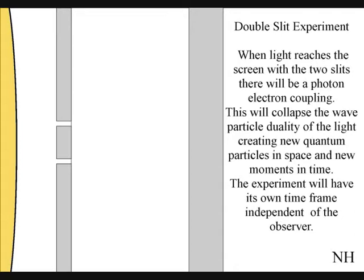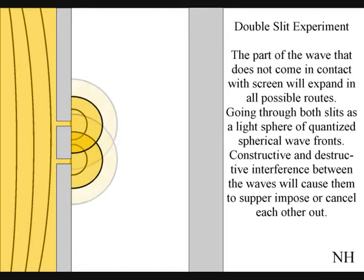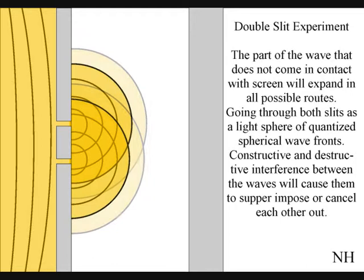In the two-slit experiment, when light waves reach the screen with the two slits, the waves of light that come in contact with the screen will collapse into new photons that will have a position in space and time. The waves that don't come in contact with the screen will go through both slits, and constructive and destructive interference between the waves will cause them to superimpose or cancel each other out.